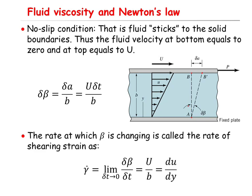Let's represent the change in angle from AB to AB' by delta beta. Using trigonometry rules, delta beta will be equal to delta A divided by the thickness of the fluid B — that is delta A divided by B. And we know delta A, the displacement, is equal to velocity U times delta t, so delta beta equals U times delta t divided by B.